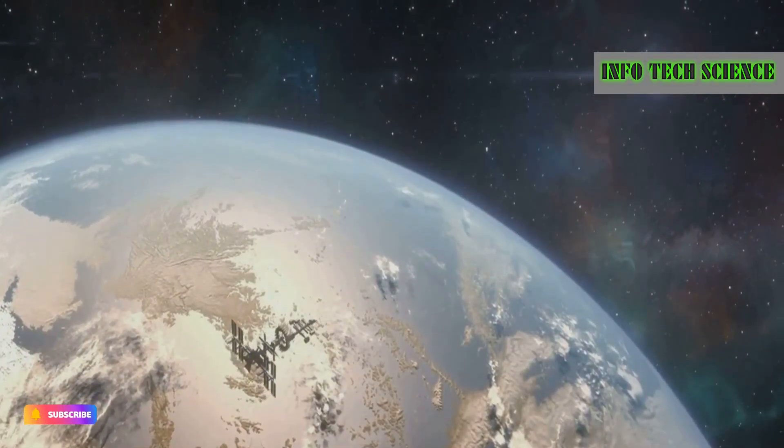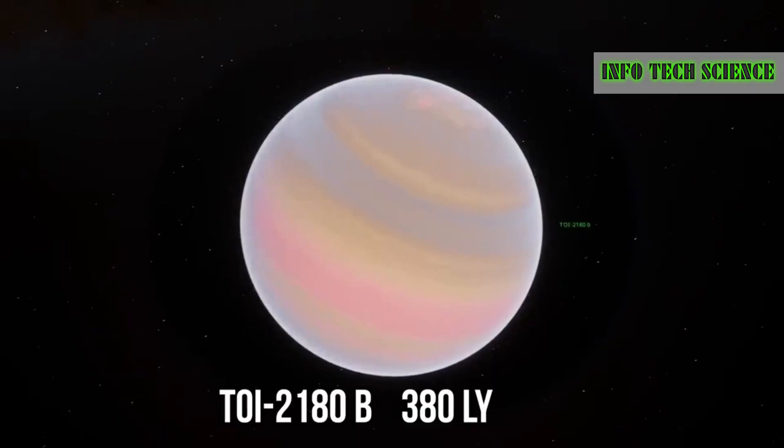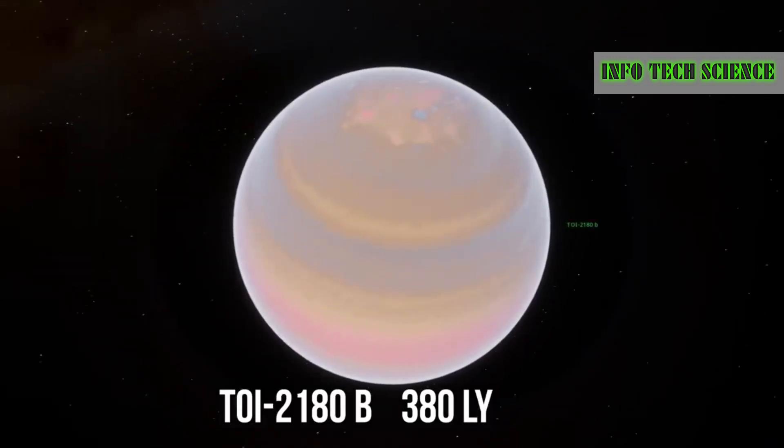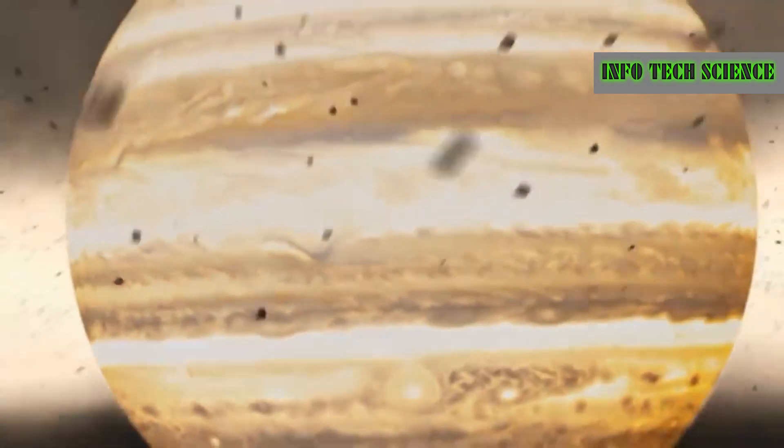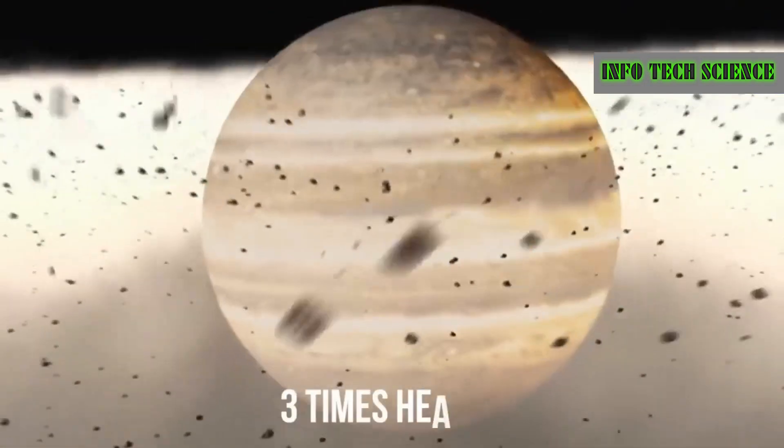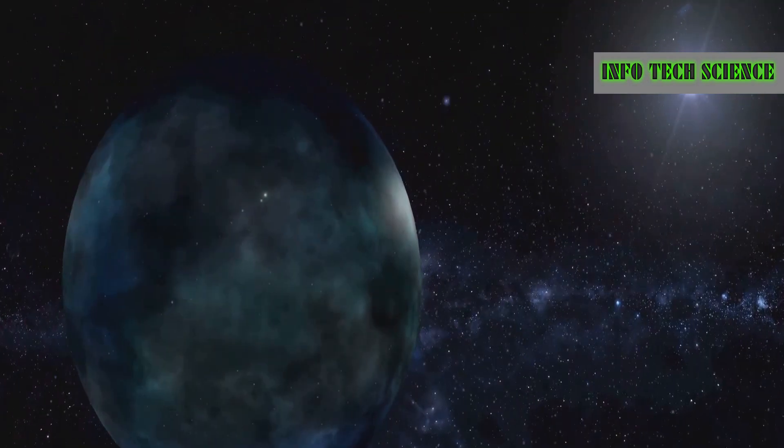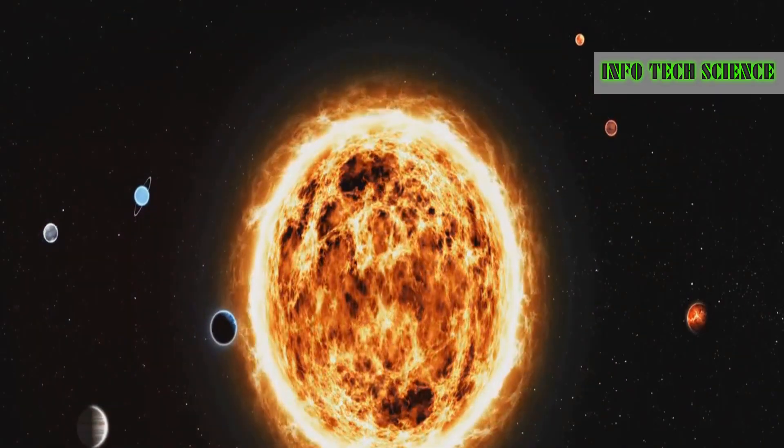TOI-2180b is a planet 380 light years away from Earth. It's the same size as Jupiter but weighs three times as much, which is unusual for a gas object. Despite being far from its star, it maintains a temperature of 80 degrees Celsius, much colder than other space giants. This could suggest a hidden oasis beneath its dense gas layers.